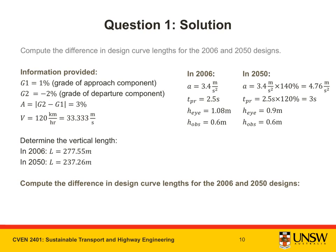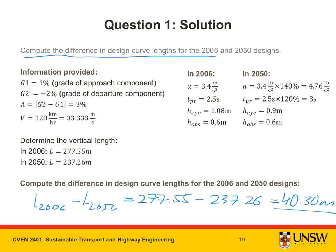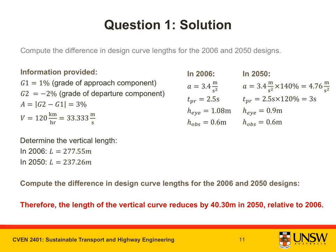Now, we can compute the difference in our design curve length for 2006 and 2050. L in 2006 minus L in 2050 is equal to 277.55 minus 237.26. This gives us 40.30 meters. So now we've solved the question. The question asked us to compute the difference in design curve length for 2006 and 2050. We found the vertical design curve length for 2006 and 2050 and we subtracted them from each other. So this number here, 40.30 meters, is the answer to this question.